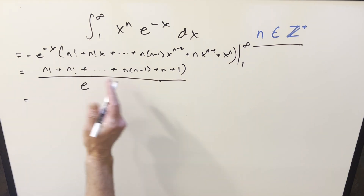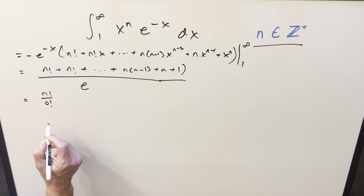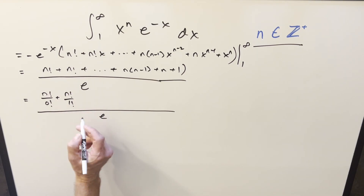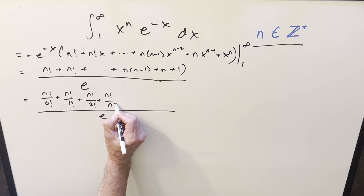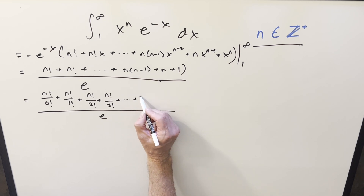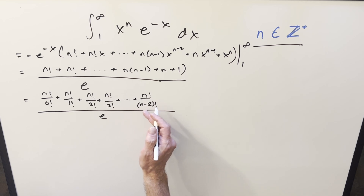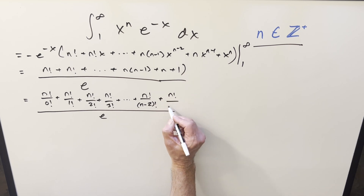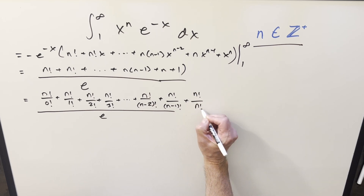Now we have some kind of answer, but the question is how can we simplify the numerator. What I want to do is rewrite it. For n factorial, I can write this as n factorial over zero factorial — but zero factorial is just one. For the second one, I can write this as n factorial over one factorial. Then the next one is n factorial over two factorial. Getting to the last three terms, I can write this as n factorial over n minus two factorial — that gives back n times n minus one. Similarly, n factorial over n minus one factorial just gives us n. And for the one, I can write this as n factorial over n factorial.